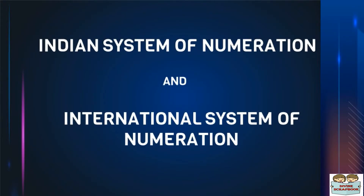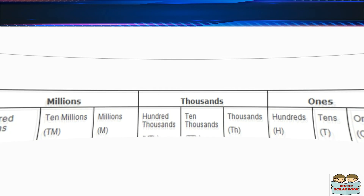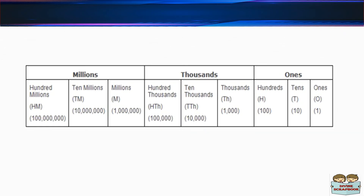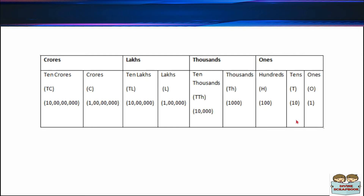Moving on to the Indian and international system of numeration. There are two systems of numeration. The first one is the Indian system of numeration and the other one is the international system of numeration. The Indian system places the value of digits in the sequence of 1s, 10s, 100s, 1,000s, 10,000s, lakhs, 10 lakhs, crore, 10 crore, and so on.